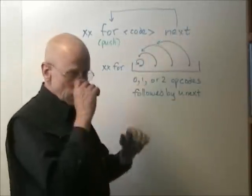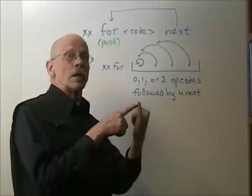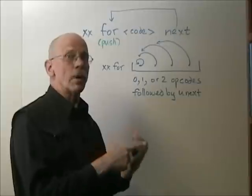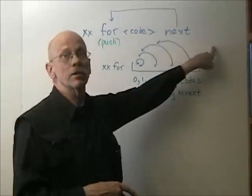What NEXT does, then, is to look at R. If R is 0, the loop is over, and R is popped, and we continue execution after NEXT.